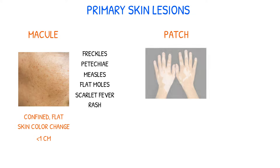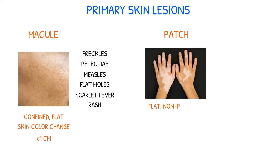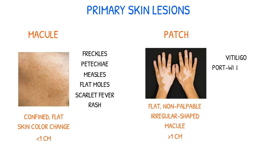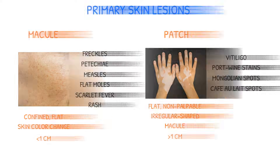A patch is a flat, non-palpable, irregular-shaped macule with a diameter more than one centimeter. Vitiligo, port wine stains, Mongolian spots, and café au lait spots are some types of patches.